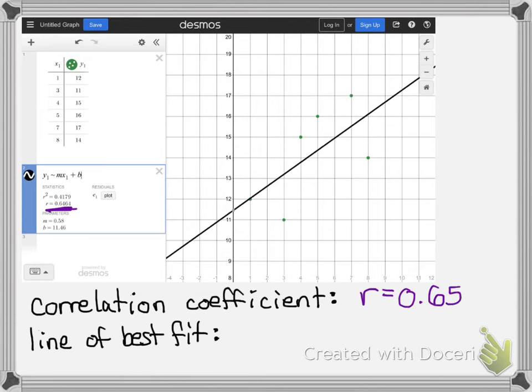And then to write the equation for the line of best fit, as you can see down here, they gave you your M and your B. Now you remember how you were taught Y equals MX plus B. Basically, what you're going to do now is plug in the value for M right here. So as you can see, M equals 0.58. So I'll say Y equals 0.58X.